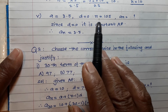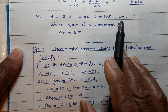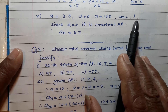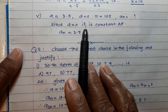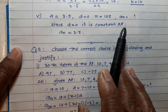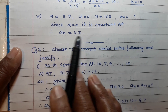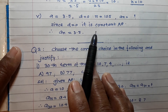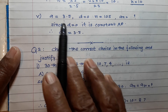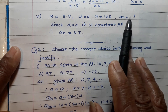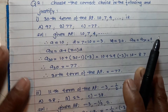Question 5: a = 3.5, d = 0, n = 105, find aₙ. Since d = 0, this is a constant AP, and therefore aₙ = 3.5. You can verify using the formula — you will get the same answer.